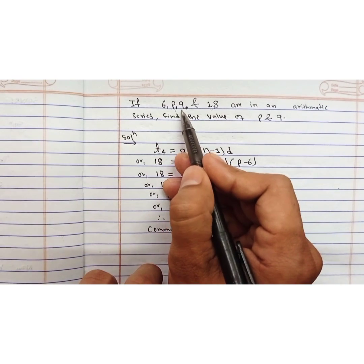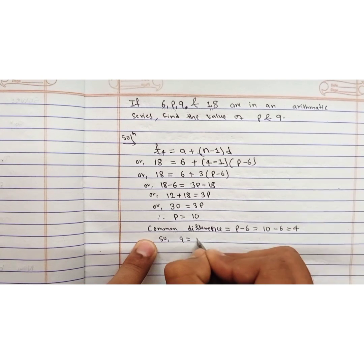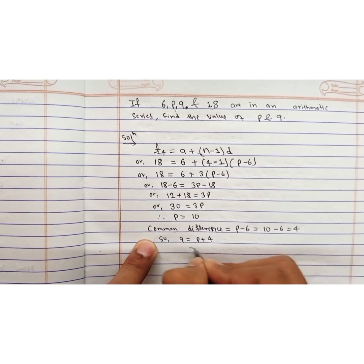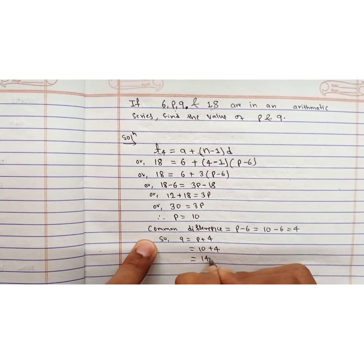And if the value of p is 10, then q can be written as p plus 4, which equals 10 plus 4 equals 14.